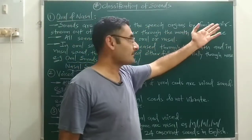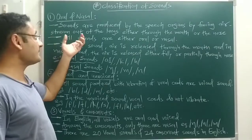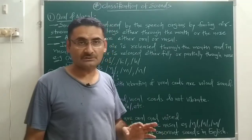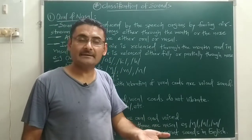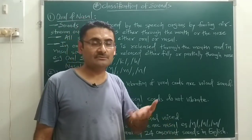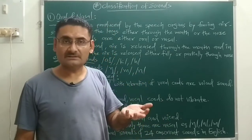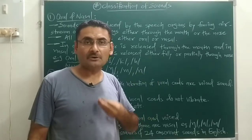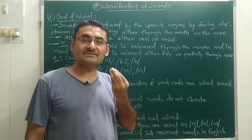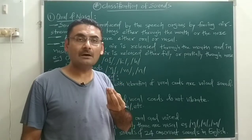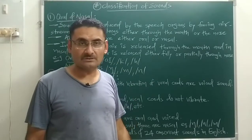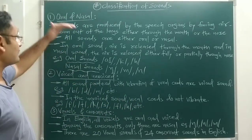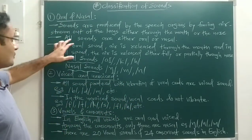Generally, sounds are produced with the help of speech organs by forcing an air stream out of the lungs, either through the mouth or through the nose. That means if you want to produce a sound, you produce it by forcing the air stream from your lungs, and that air stream may come out from your mouth or from your nose, producing different sounds.